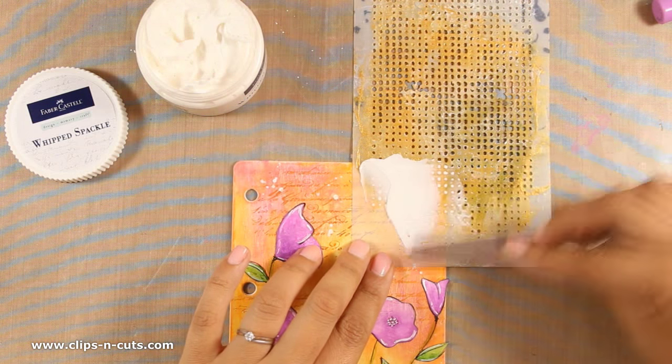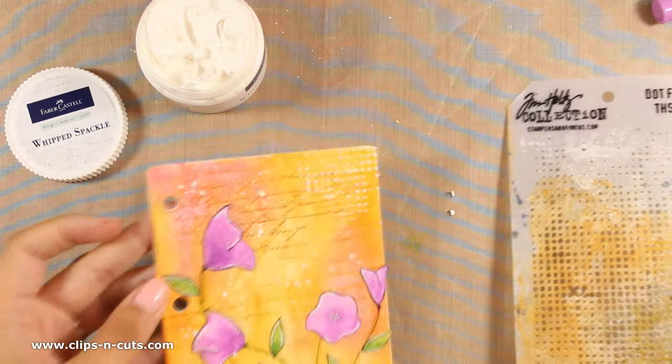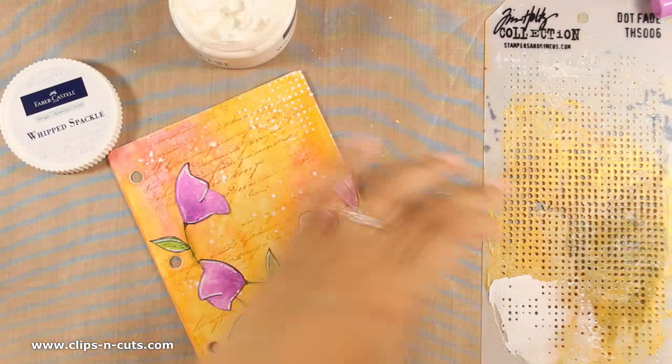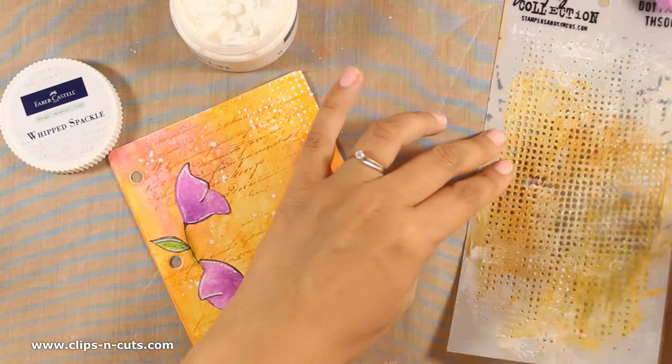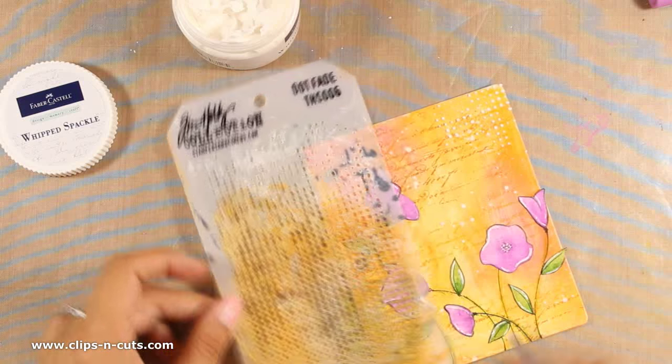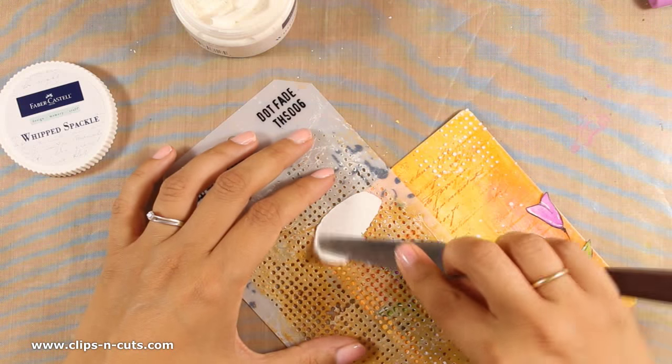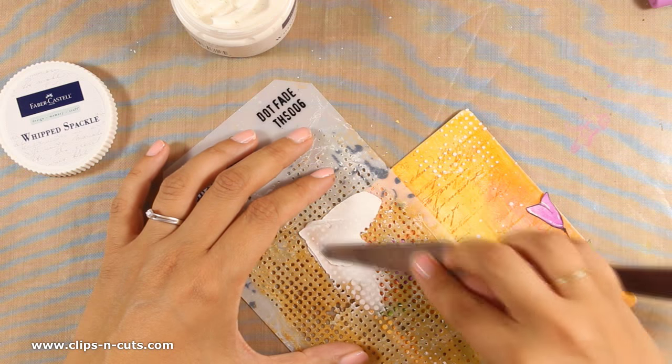This is a stencil by Tim Holtz which is called Faded Dots. It is a stencil that I have been using again and again, and for sure this is not how your stencils should look like if you are neat and tidy and you wash them out whenever you use them. We can all pretend that my stencil is nice and clean.